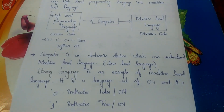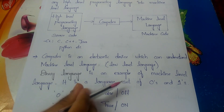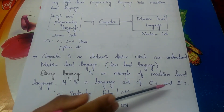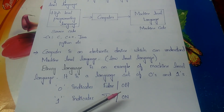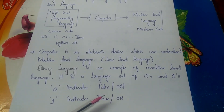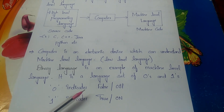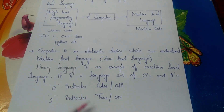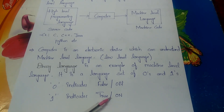Binary language is an example of machine-level language. Binary language contains a set of zeros and ones — the combination of zeros and ones is known as binary language. This is the best example of machine-level language. In binary language, zero indicates false (off) and one indicates true (on). The compiler converts high-level language into these zeros and ones that the computer understands.